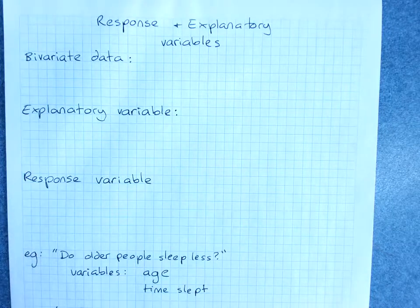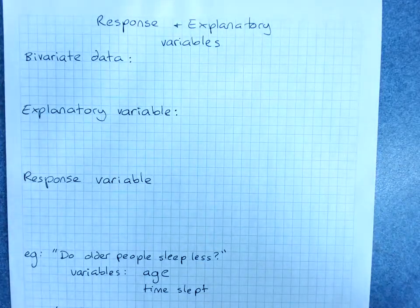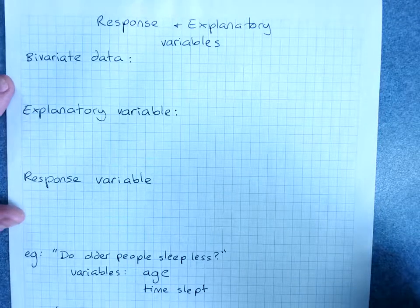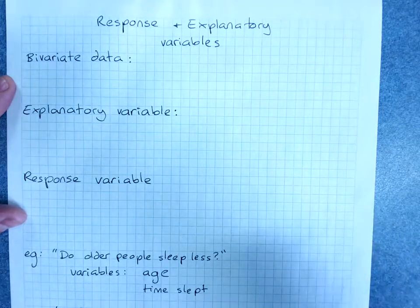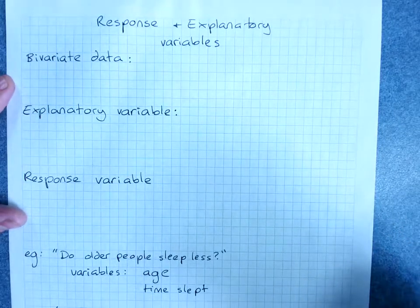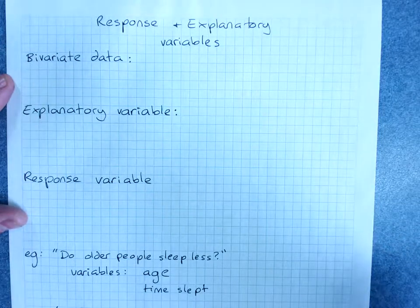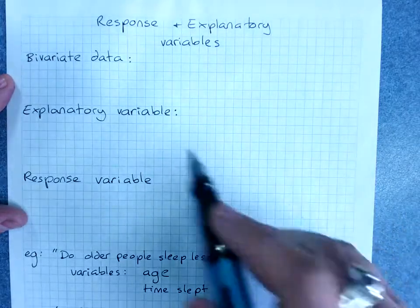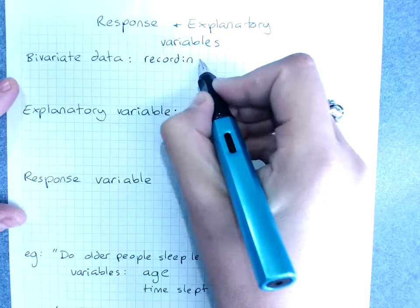Response and explanatory variables. We are studying bivariate data — that is, data where we have collected two pieces of information from each person or each situation. So if I recorded for each person here the time it takes them to get to school and how they get to school, that's two different pieces of information — bivariate — recording two different variables.